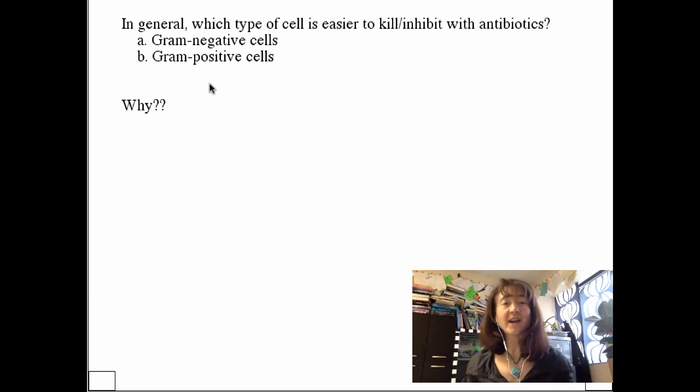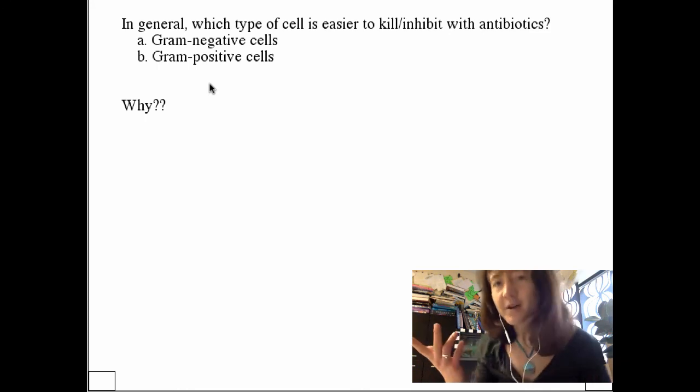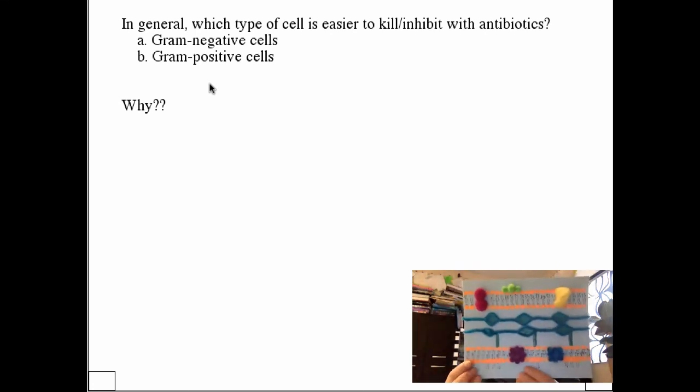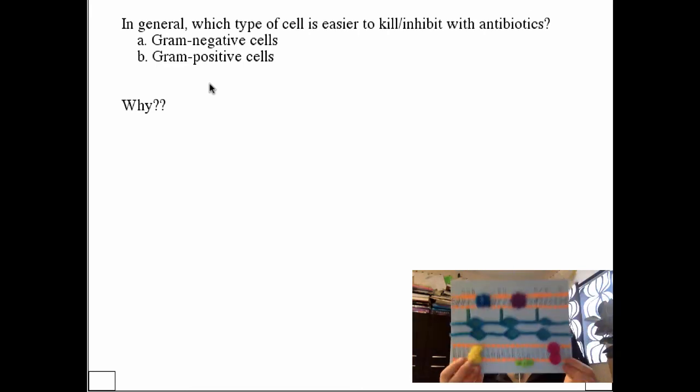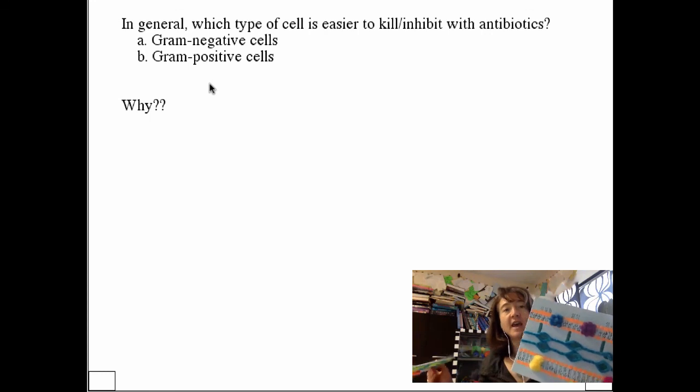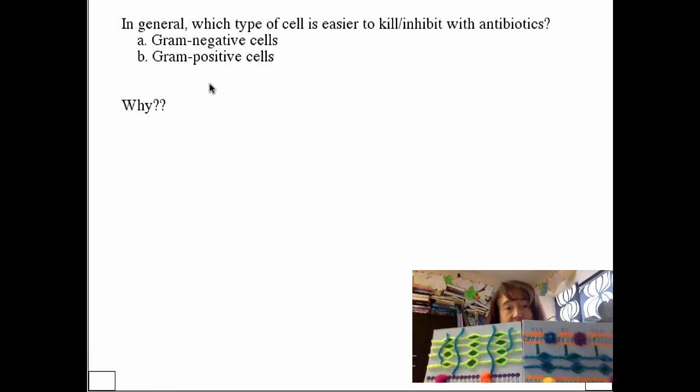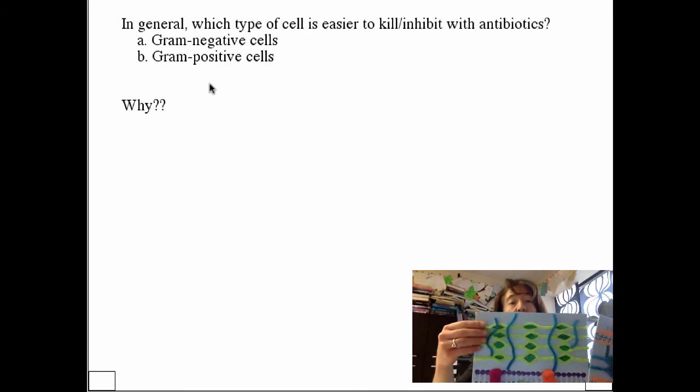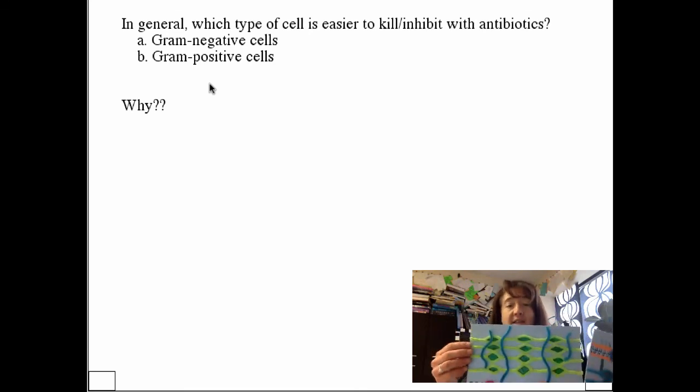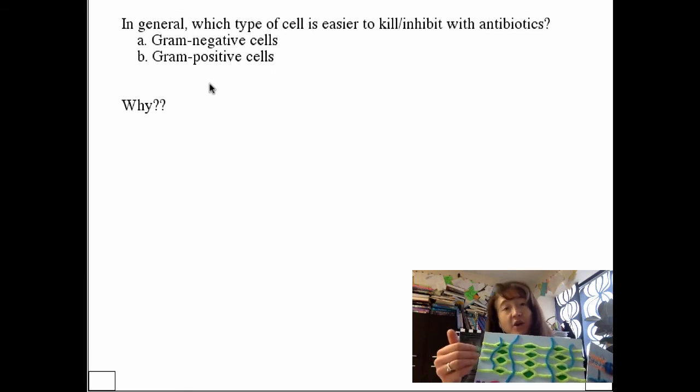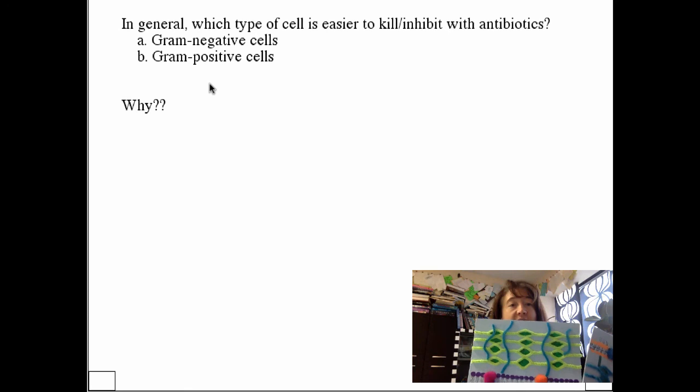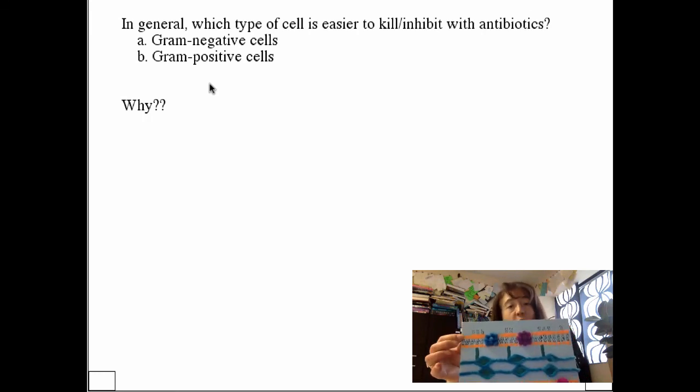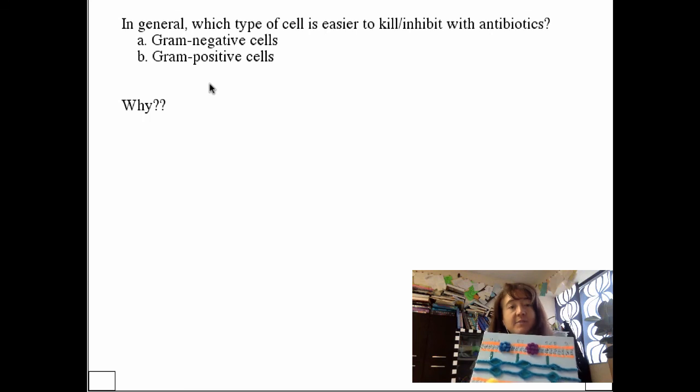I want to ask you a question before we leave antibiotics completely behind. This question has to do with the cell wall structure and how it relates to which antibiotics we choose, and how easily we can target a cell. I think you'll remember that gram-negative cells, let me grab a model. This is the gram-negative cell here and our gram-positive. When we ask which type of cell is easier to kill or inhibit with antibiotics, of course the gram-positive because it has an outer exposed peptidoglycan layer.